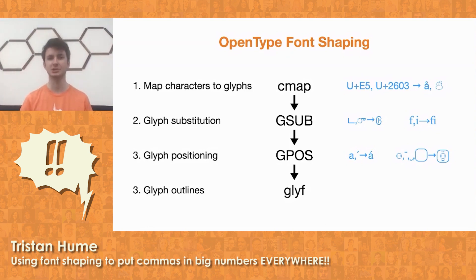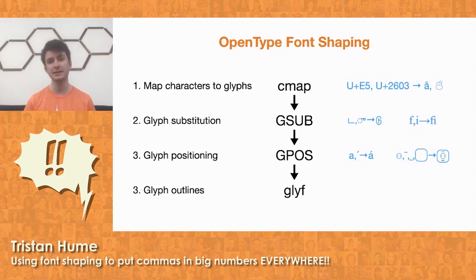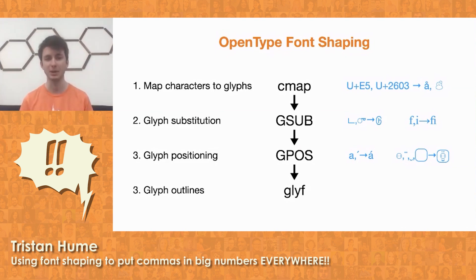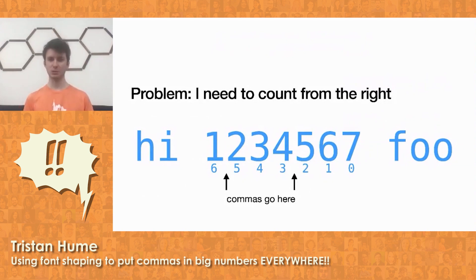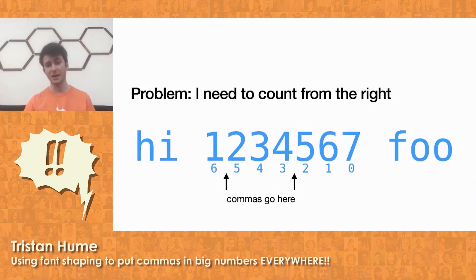At this point everything is still just internal IDs used by the font, and it needs to be rendered by the UI system. It needs to be translated to outlines, and these outlines for each glyph are stored in a table inside the font. I was reading through this specification and started to get a little worried, because everything seems to work from the start of the string towards the end of the string, and I needed to work from the end of the number towards the beginning.